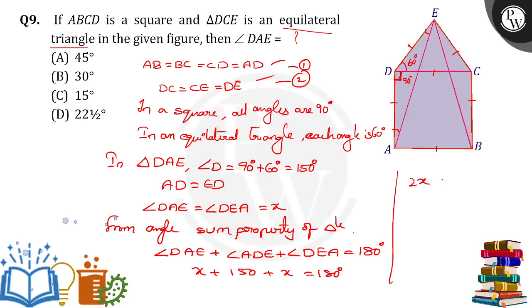Then 2X is equal to 180 minus 150. So 2X is equal to 30. Then X is equal to 30 by 2. We will get 15 degrees.